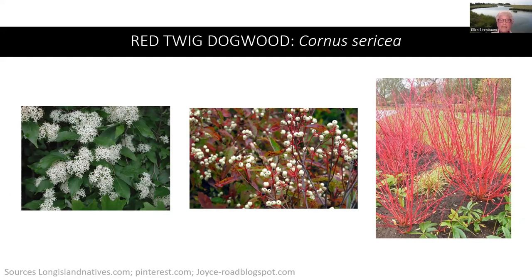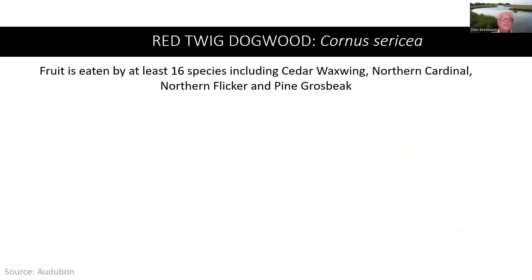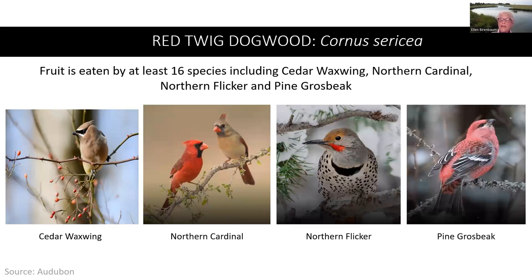The red twig dogwood is an excellent alternative to the flowering dogwood, which cannot be recommended due to its susceptibility to anthracnose. It's a medium-sized, multi-season shrub whose bright red stems are excellent for winter interest. It can be affected by powdery mildew and leaf spot late in summer. It attracts butterflies and other pollinators, and deer may browse it but it is not a preferred plant. The fruit is eaten by at least 16 species, including the cedar waxwing, northern cardinal, northern flicker, and pine grosbeak.